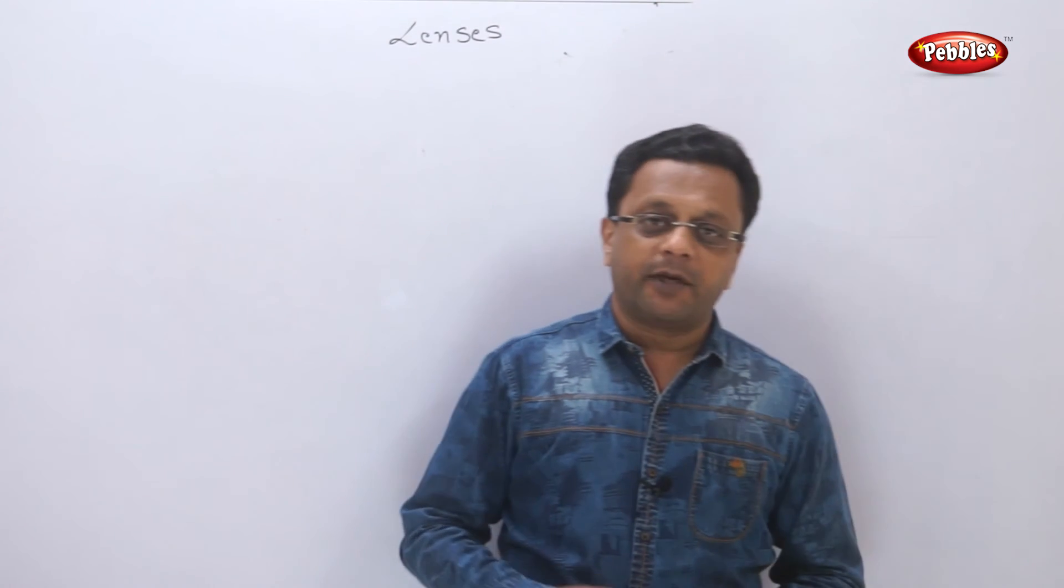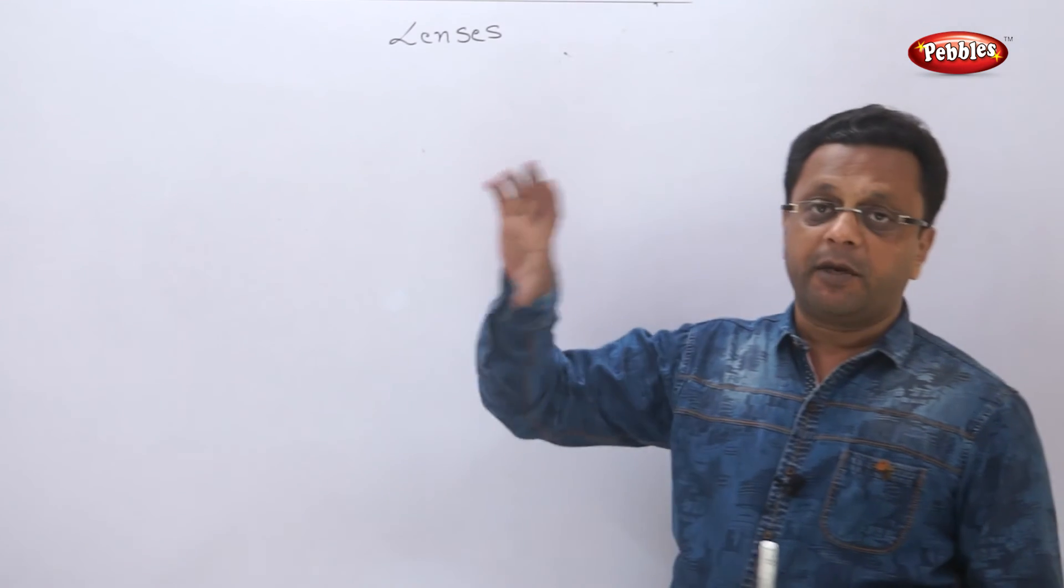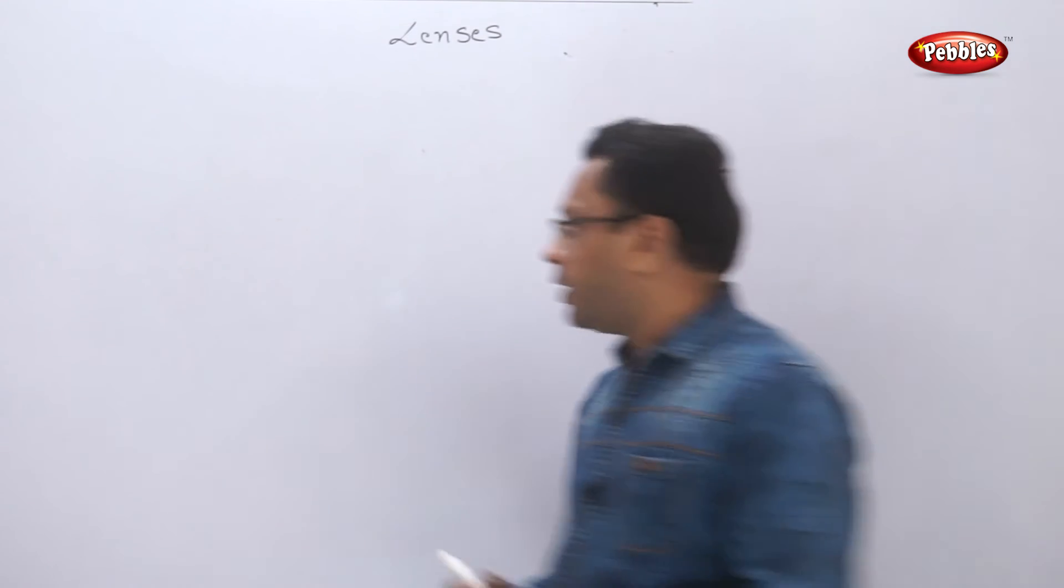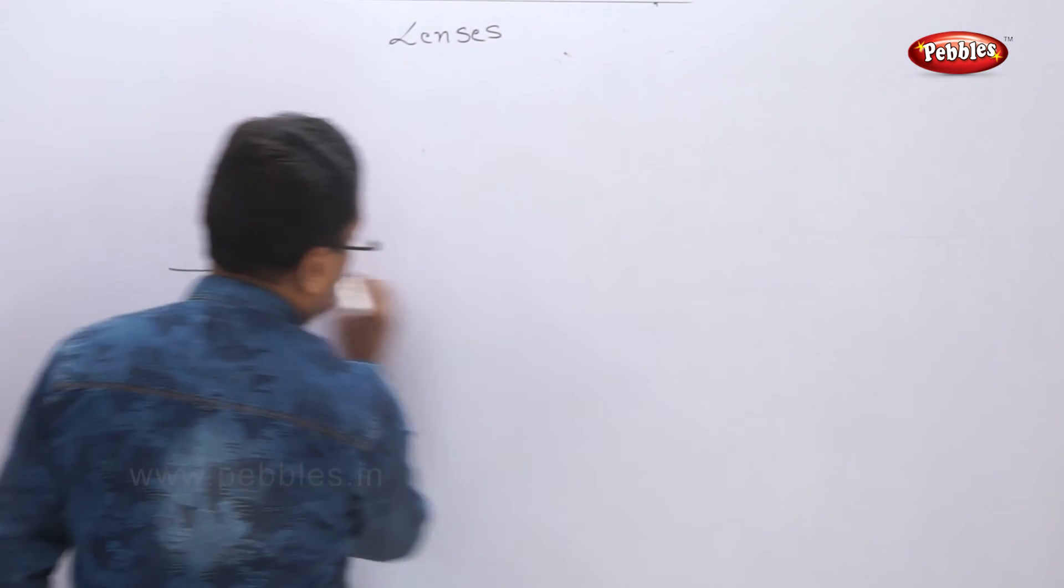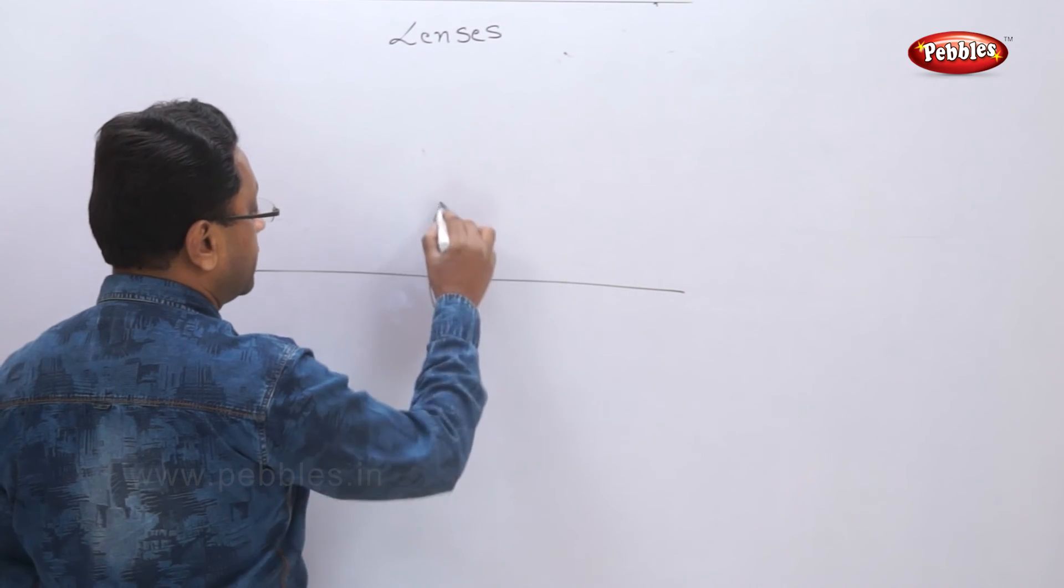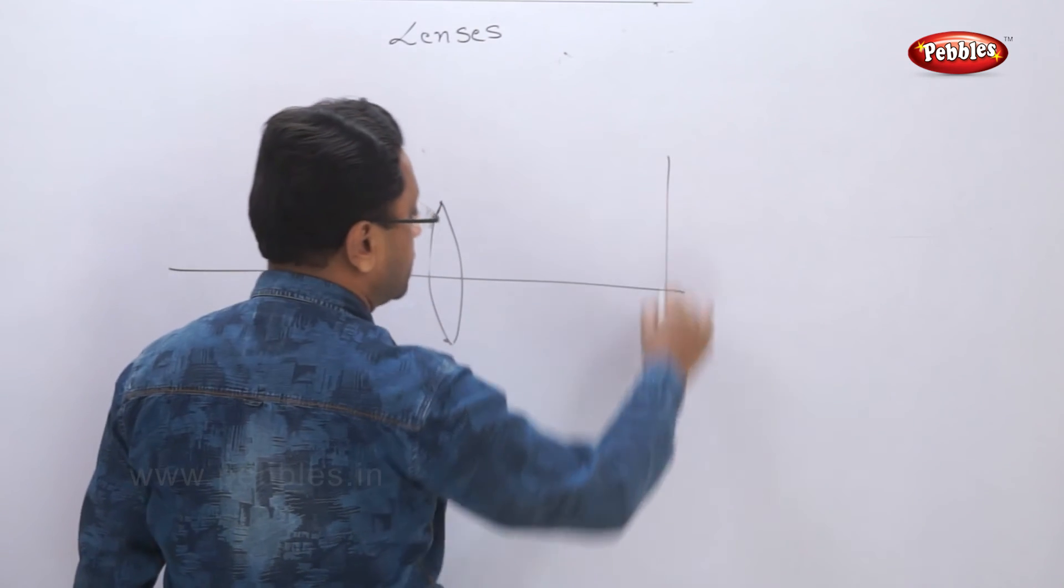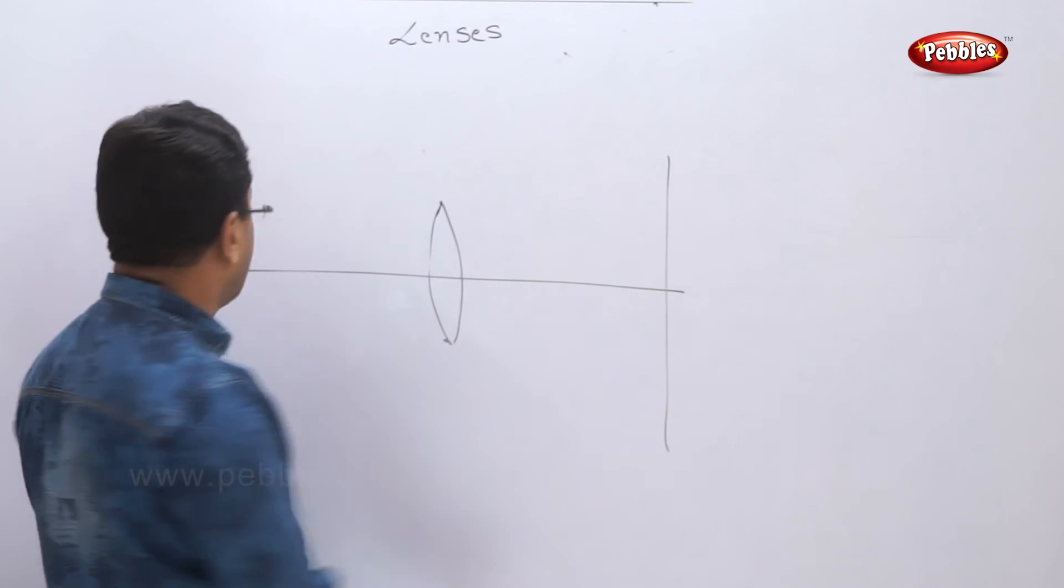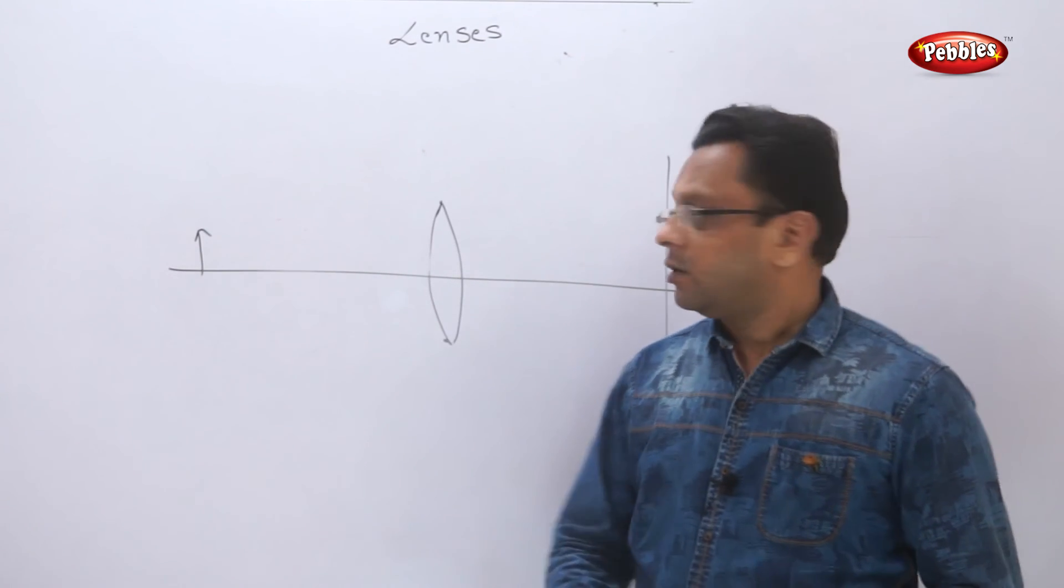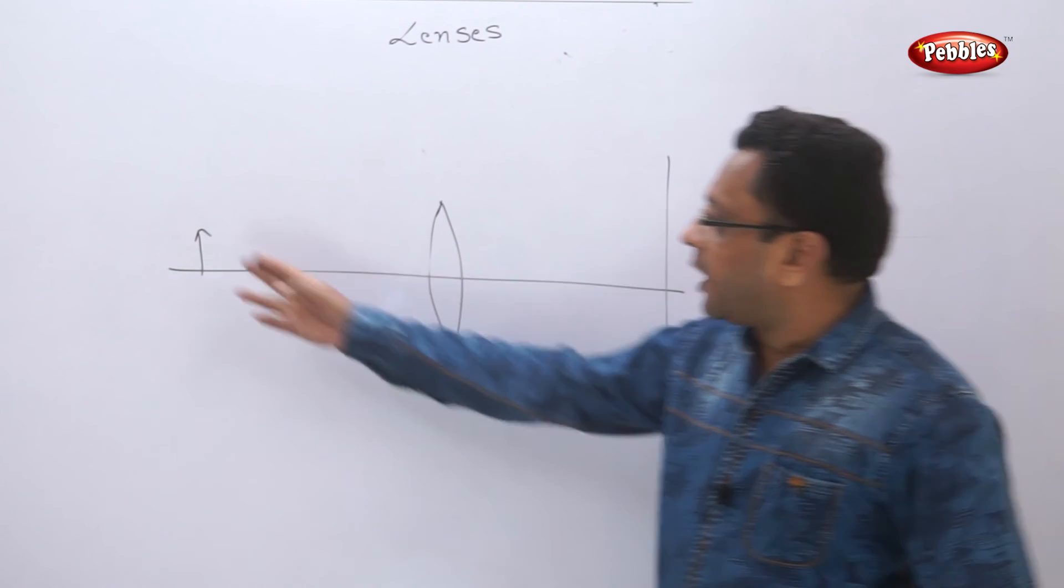Now suppose we have to make some experiments in lab. What we will do is we have to put one lens in between, then one screen. Both should be movable. So you have to mark one principal axis there. We will place the lens somewhere here, we will place the screen over here, and the object will be here. As an object we will take one burning candle.